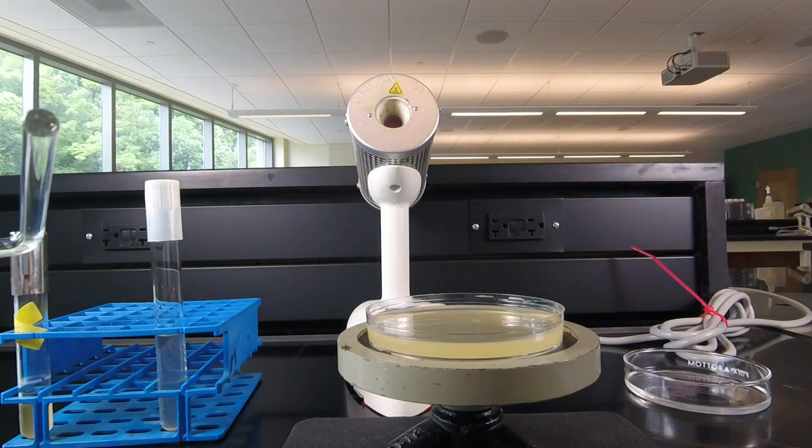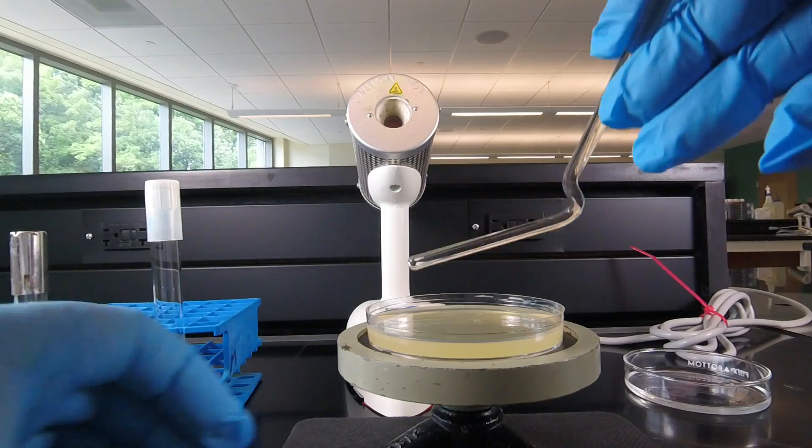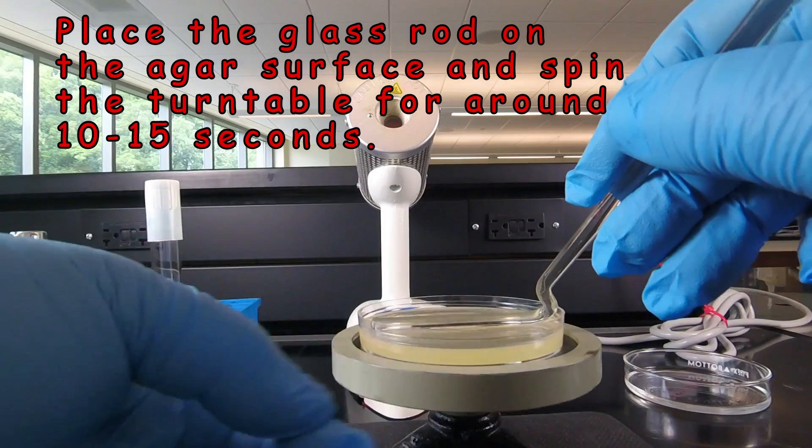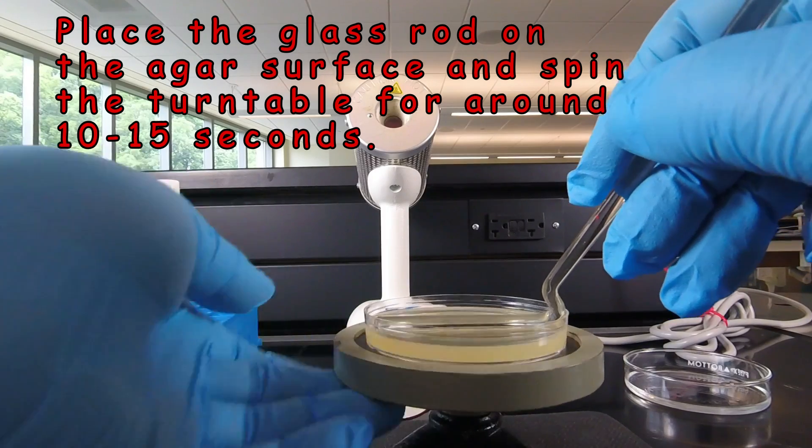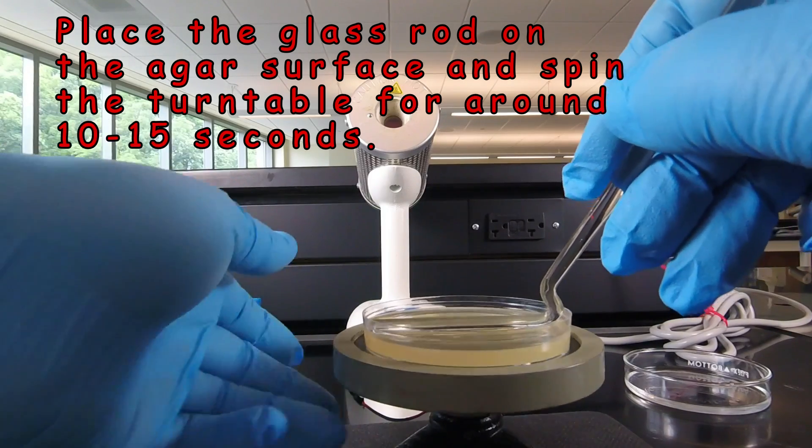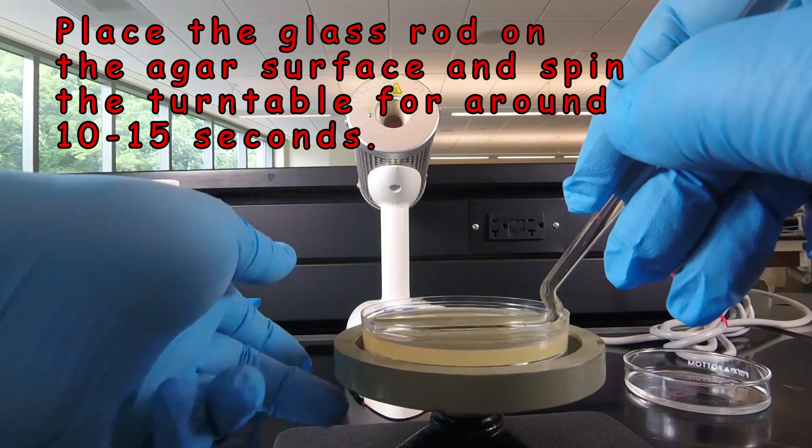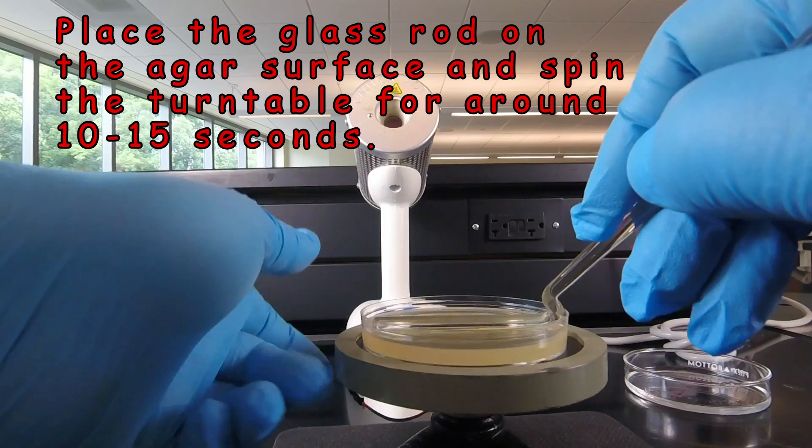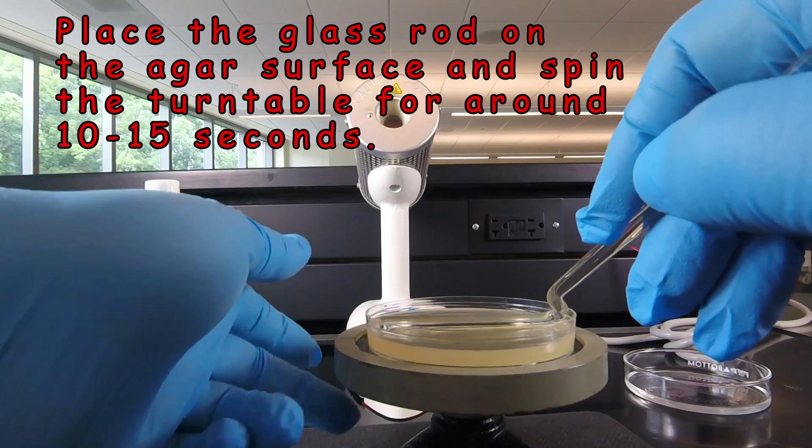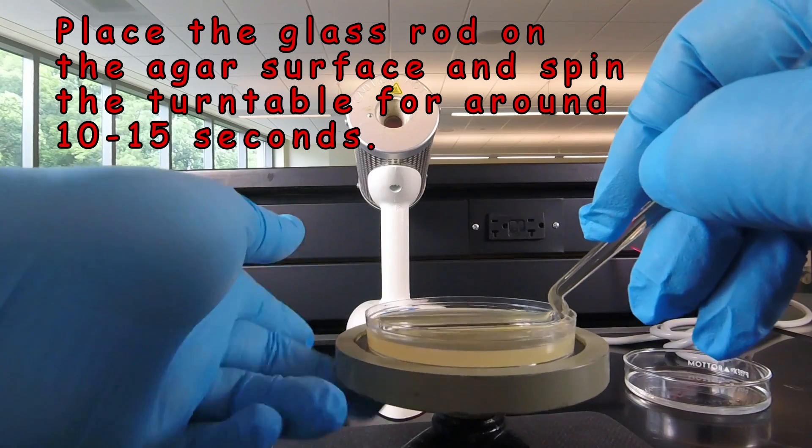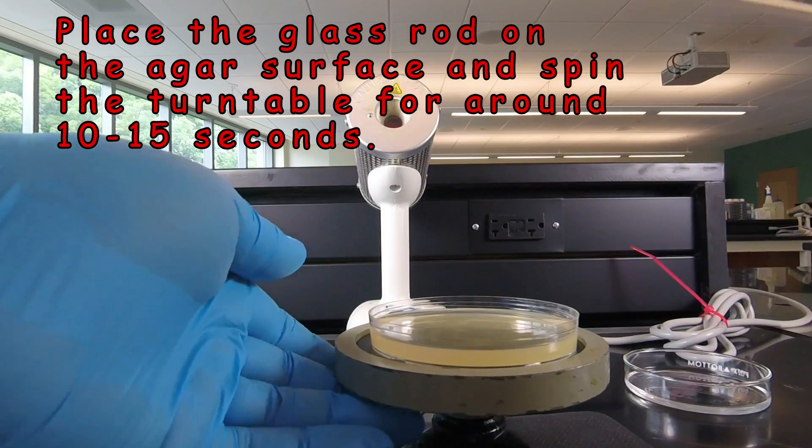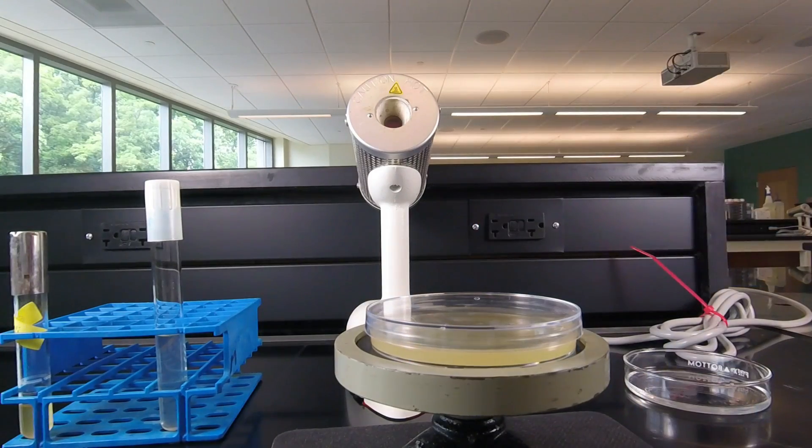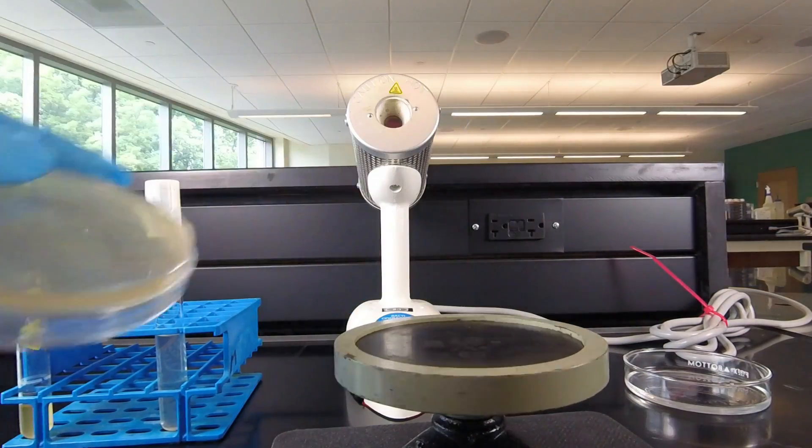Once again we do have to remove the lid. We're going to set this flat on the agar surface and then we're going to start spinning the turntable for maybe 10 to 15 seconds. After which time the bacteria are spread out pretty well we're going to put the cap back on the petri plate. And then that can be incubated.